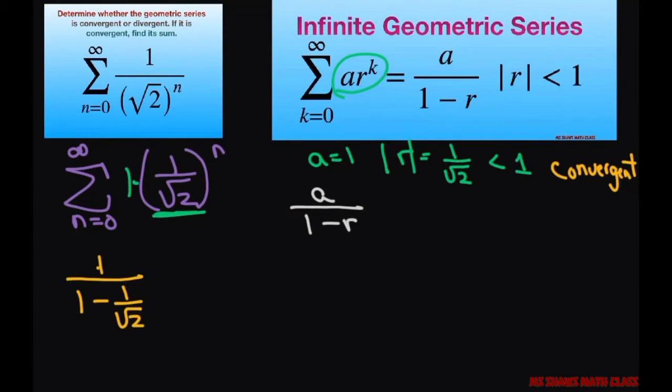Getting a common denominator for the denominator, that's going to be square root of 2 minus 1 divided by square root of 2. I can move this square root of 2 up to the numerator. So it's going to be square root of 2 divided by square root of 2 minus 1.